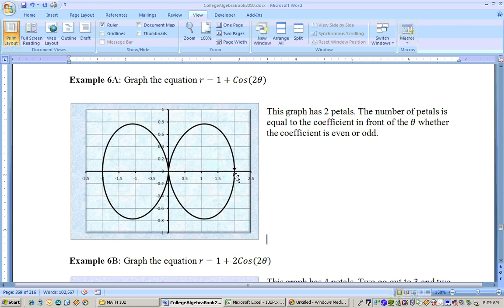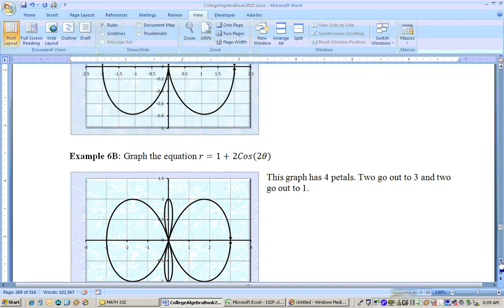And you can see how far out they go, out to 2 on both sides, 2 and negative 2 is where the two petals go. And again, you could just graph that on the Excel sheet.